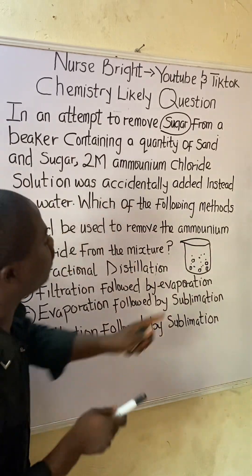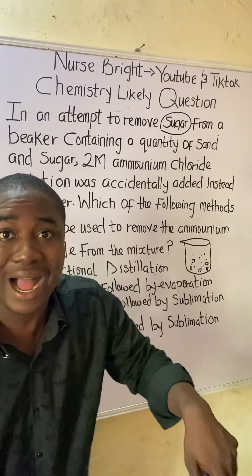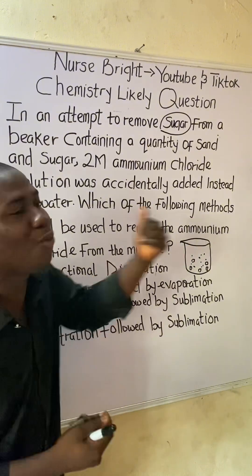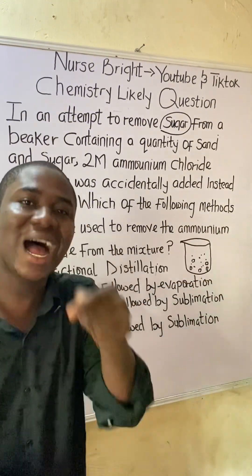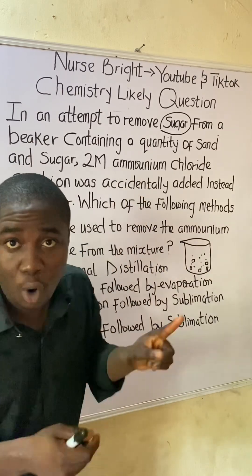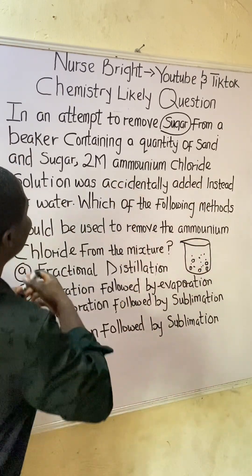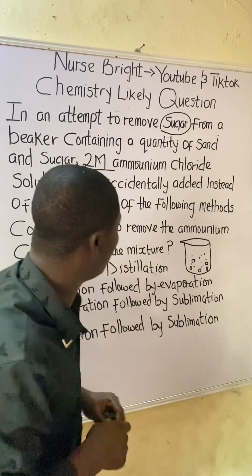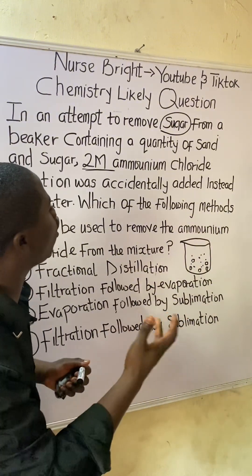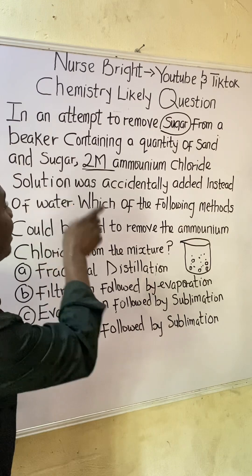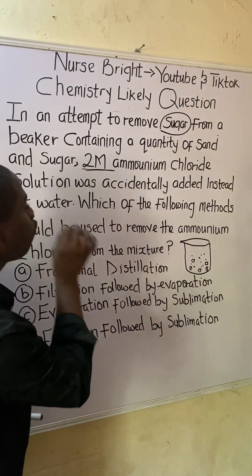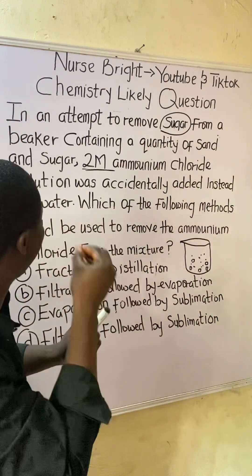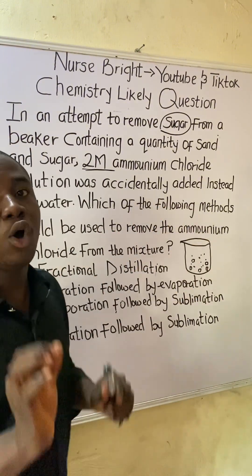As we were trying to remove the sugar from the beaker containing sugar and sand, we wanted to remove it by adding water to the beaker, but accidentally ammonium chloride was added instead of water. The concentration specified doesn't really matter here. The question now asks: which of the following methods could be used to remove the ammonium chloride from the mixture?